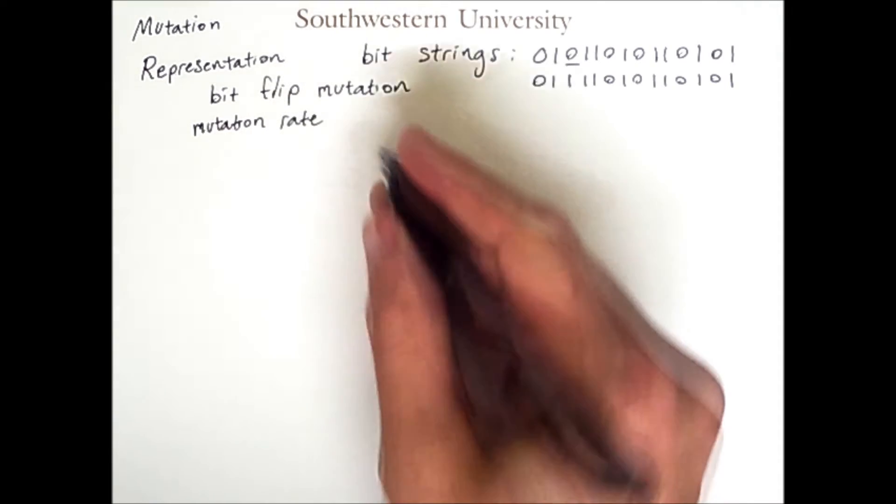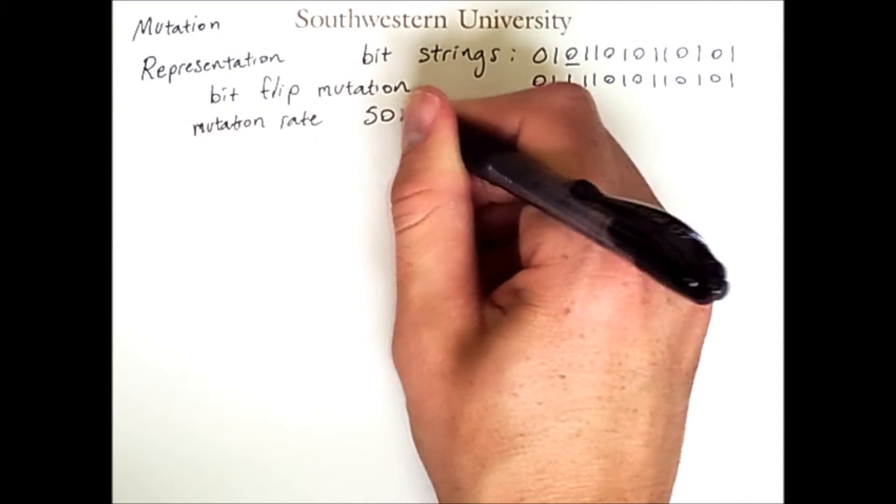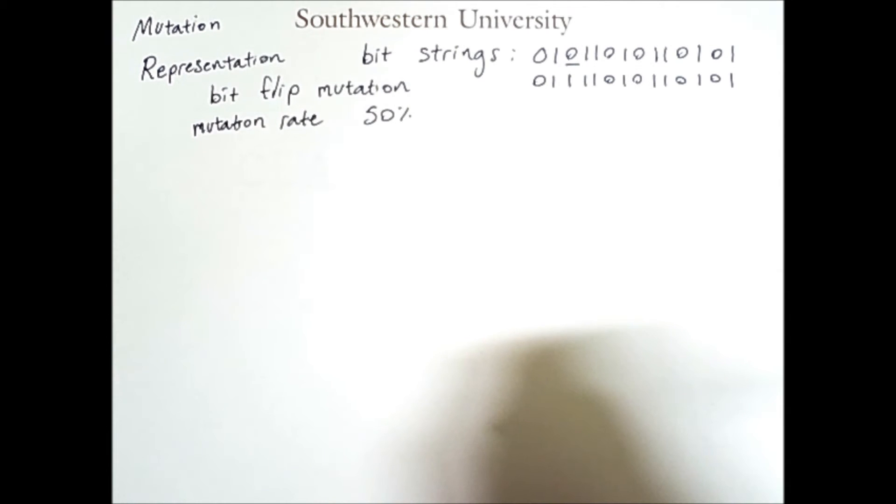For example, let's say we had a 50% mutation rate, meaning that there is a 50% random chance that one randomly chosen bit will be flipped.